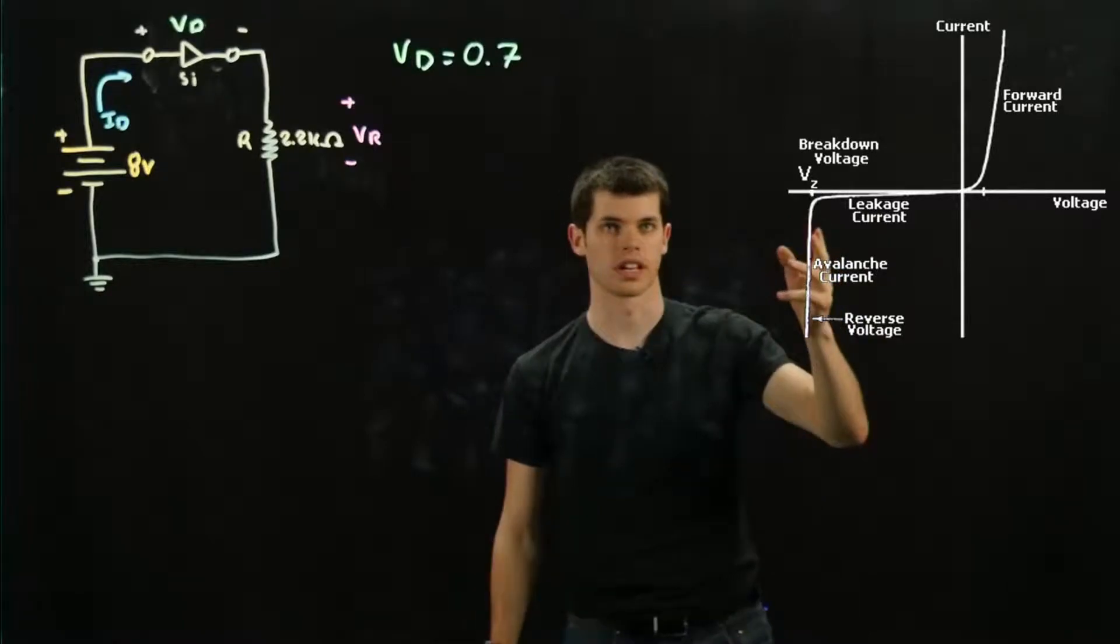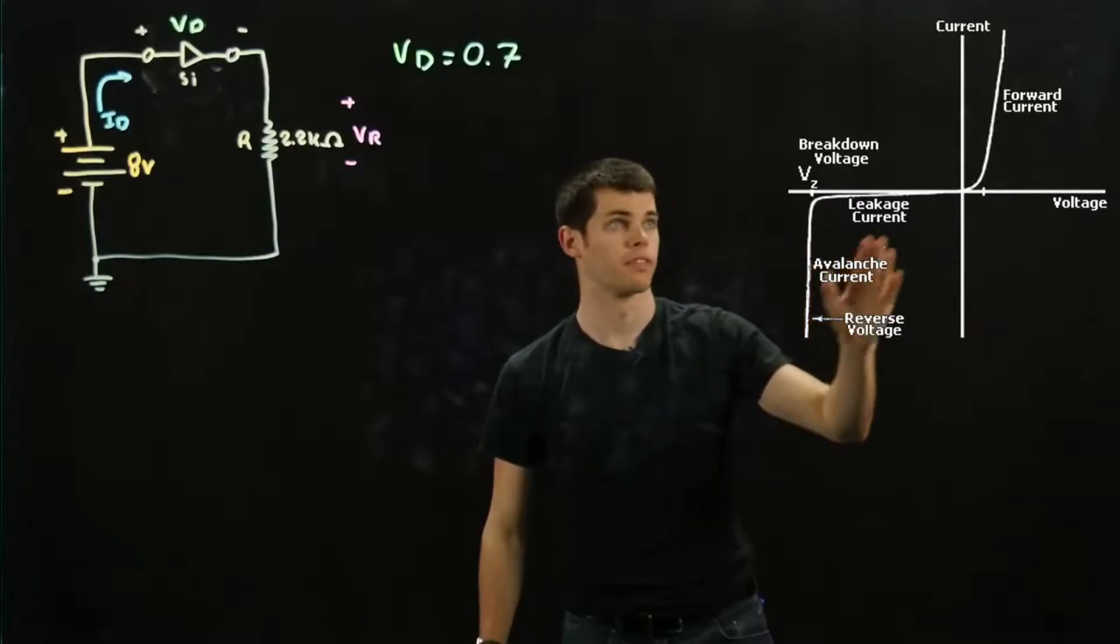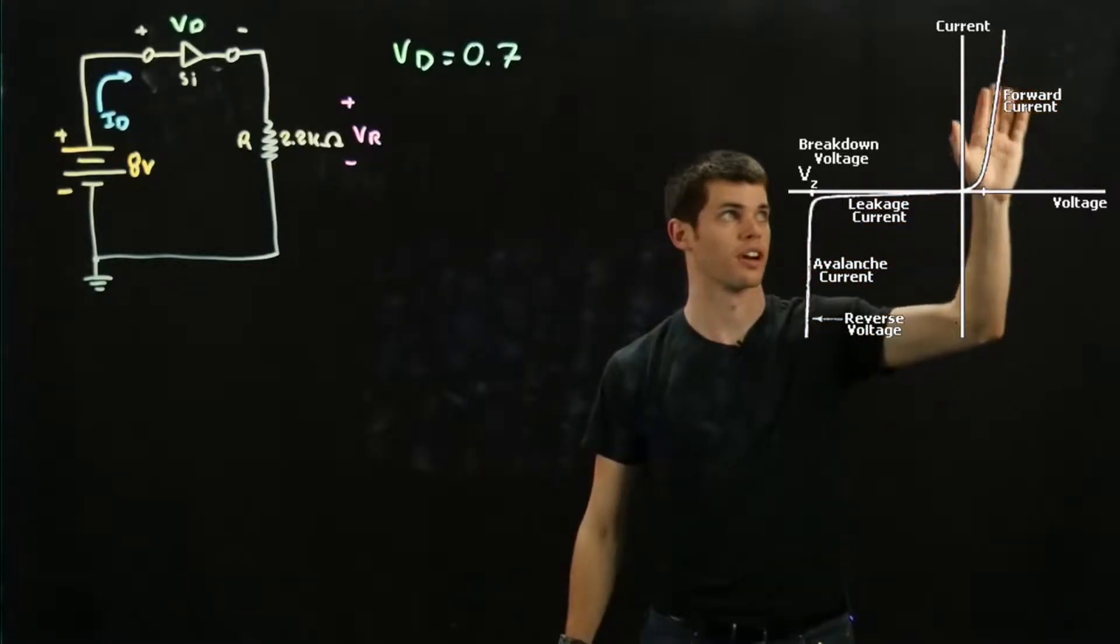This is actually where a Zener diode comes into play, which is you intentionally flip it because you get some interesting things that happen. But for right now, we're just going to deal with the forward current right here.